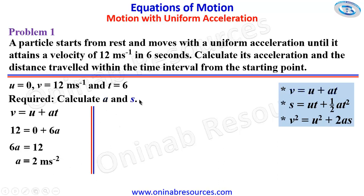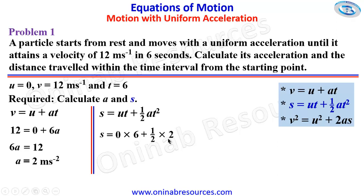We are done calculating the acceleration. We go ahead to calculate the distance. We can use either the second or the third equation. Since we have V, U, A and we are looking for S, and we also have U, T, A, we are going to make use of the second equation. Substituting: S is equal to 0 times 6 plus half times 2 times 6 squared. The first part is 0, so 2 times half gives 1, and 6 squared is 36 meters.